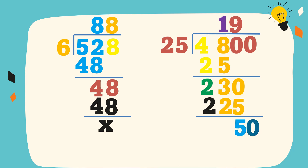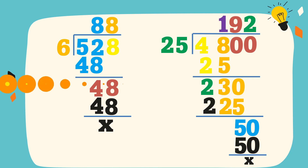Then bring down 0. 50 divided by 25 is equal to 2. 2 times 25 is equal to 50. 50 minus 50 is equal to 0. Therefore, the quotient is 192.